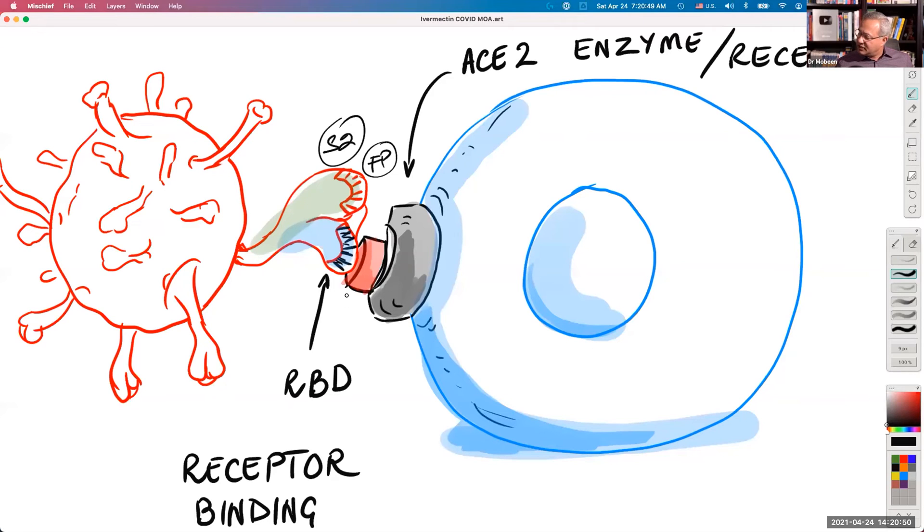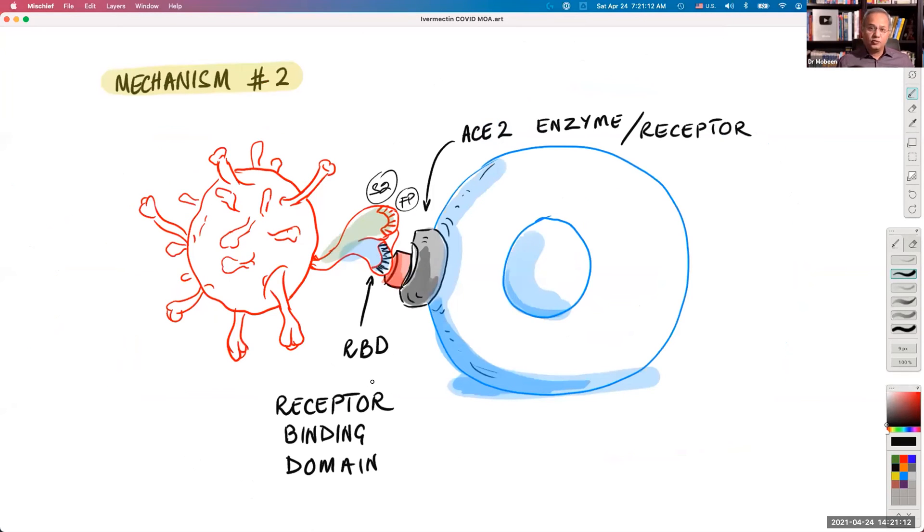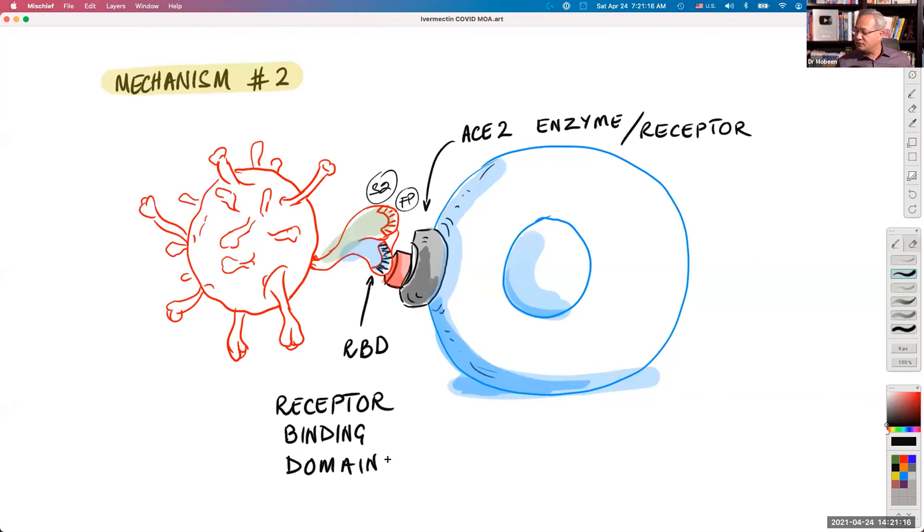If you see here, this red block is ivermectin. Ivermectin in silico studies have shown to be connecting to the RBD of the spike protein plus the ACE2 enzyme. So it almost becomes a hindrance for the virus to be able to successfully bind and enter the cell. So that is a very important mechanism, potential mechanism that disrupts the SARS-CoV-2's function.